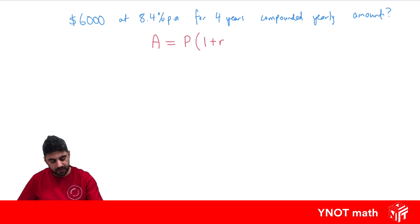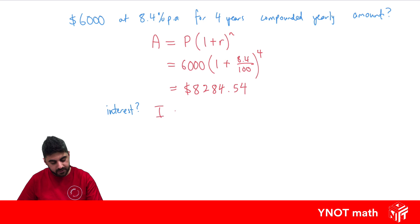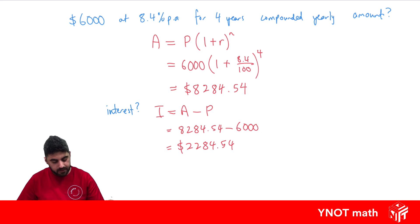We can go ahead and use our formula to find the total amount: A equals our starting amount outside of (1 plus our rate) to the power of n. Starting amount is six thousand, rate is 8.4 divided by 100 to convert it to a decimal, to the power of four. Putting this all in the calculator gives us eight thousand two hundred and eighty-four dollars and fifty-four cents. For the interest, we take the final amount minus the principal: $8,284.54 minus $6,000 gives us two thousand two hundred and eighty-four dollars and fifty-four cents.